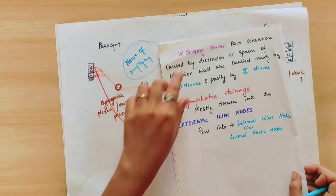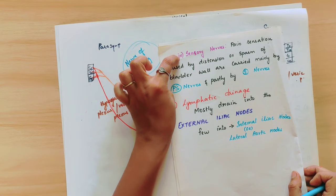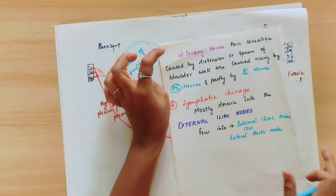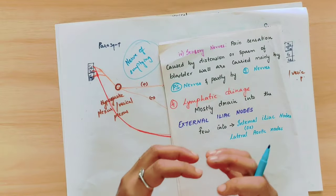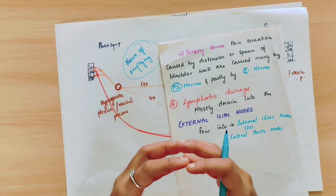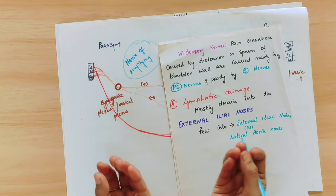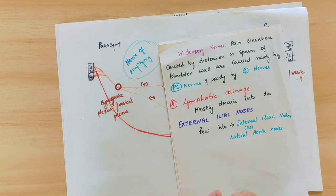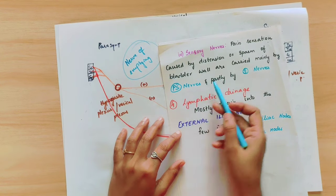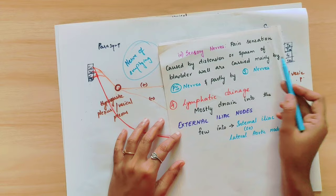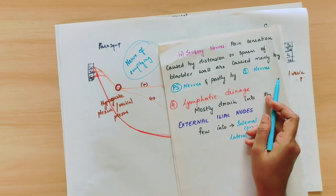Regarding the sensory nerve supply: the sensory nerve carries the sensation of any distension or spasm of the urinary bladder. When the urinary bladder is fully distended or has pain or spasm due to the detrusor muscle, the message is carried partly by the parasympathetic nerve and partly by the sympathetic nerves.